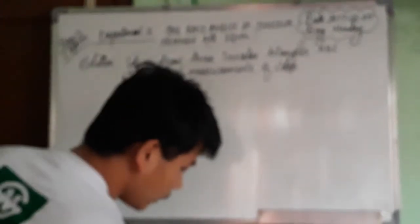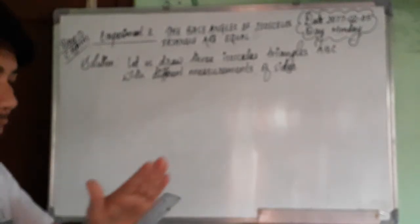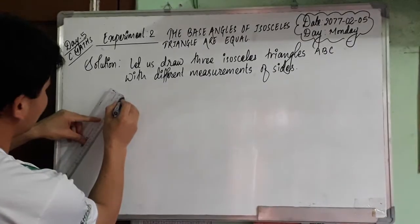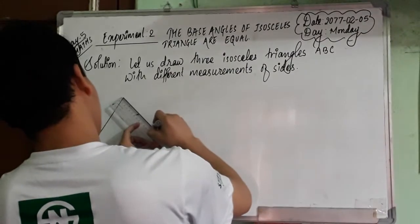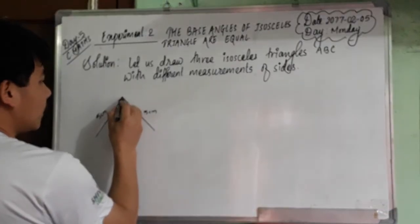Isosceles triangle means two sides are equal. The triangle has two equal sides. I'll use a scale to draw. This is five centimeters, this is also five centimeters. AB is five centimeters and AC, the line AC is five centimeters. When you get five, these two sides are equal.